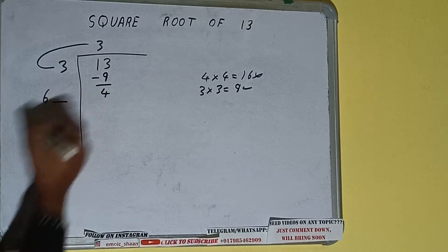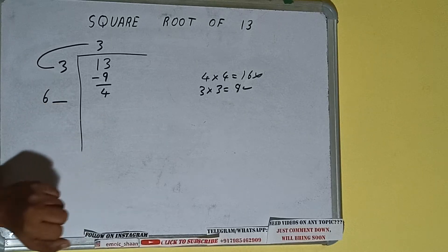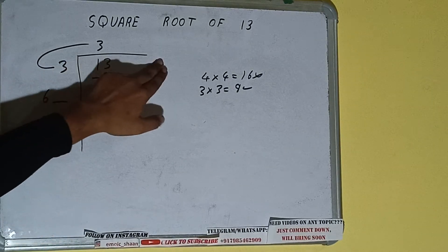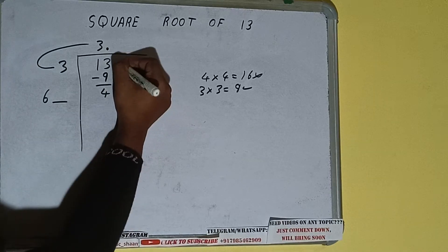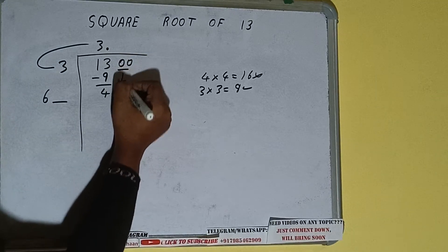Write it here and keep a digit extra. And this number we need to make it bigger, but we don't have more pairs, so we'll put a decimal. Once we put decimal, we can bring a pair of zeros down and it will be 400.